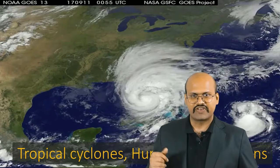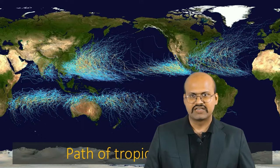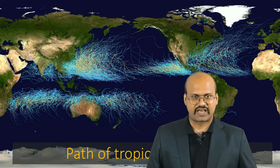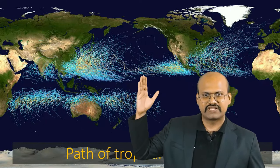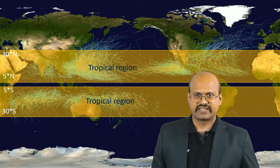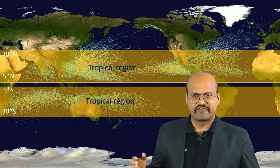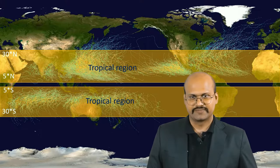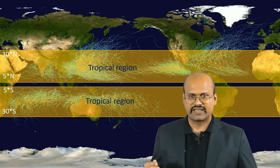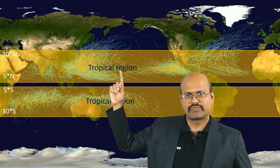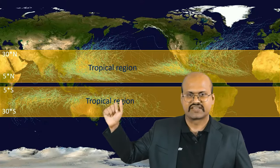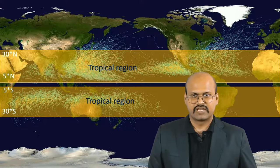In this map we can see the path taken by tropical cyclones. From this image we can clearly see that most of these cyclones are formed within the tropical areas, that is between 5 degrees to 30 degrees latitude. Later in this video we will see why tropical cyclones are formed only in this area.